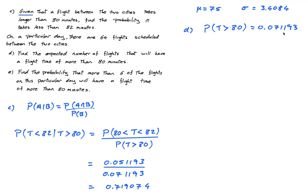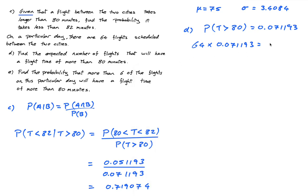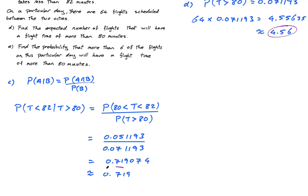So how many of these 64 are longer than 80 minutes? Well, I'm just going to multiply that by 64. So 64 times 0.071193 equals 4.55635, or approximately equal to 4.556 flights. That's the expected number of flights.